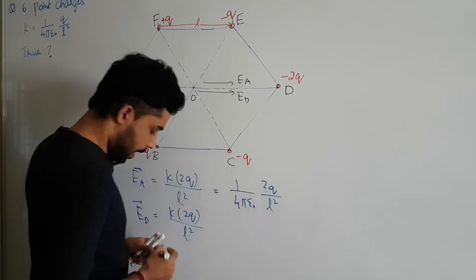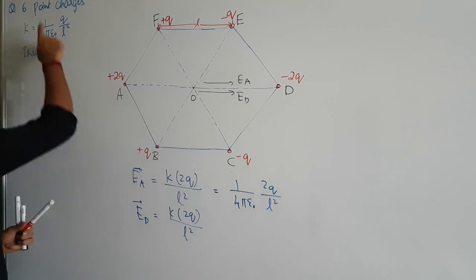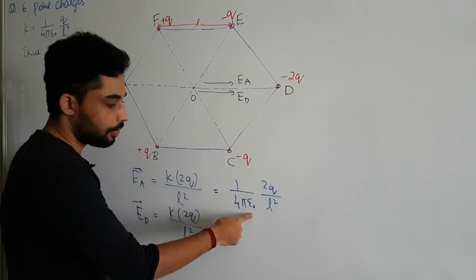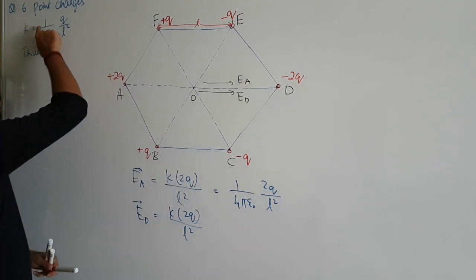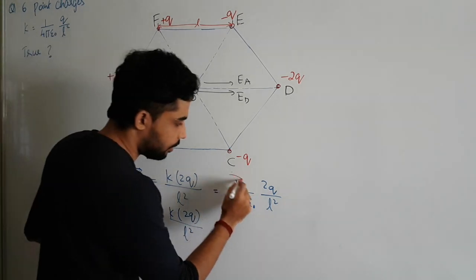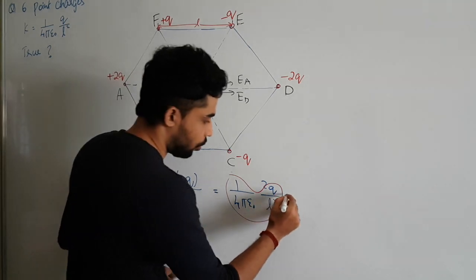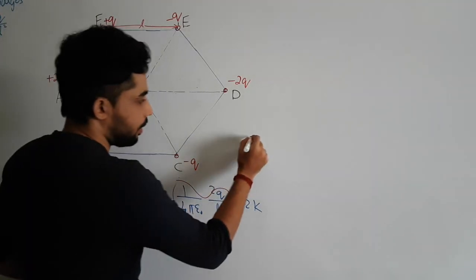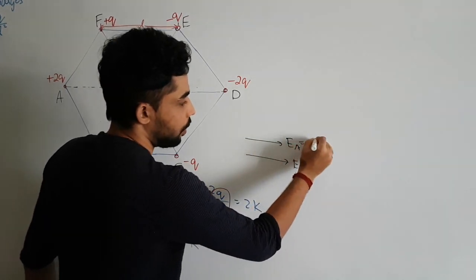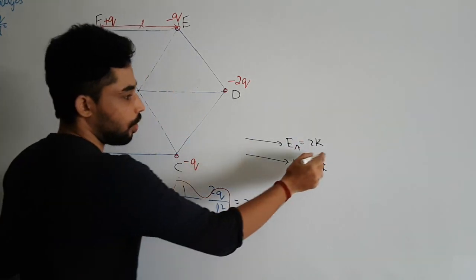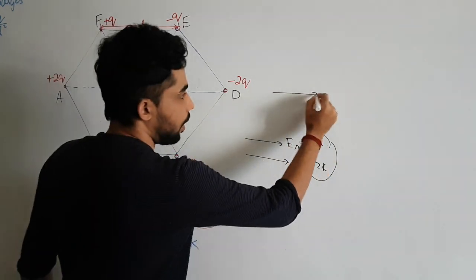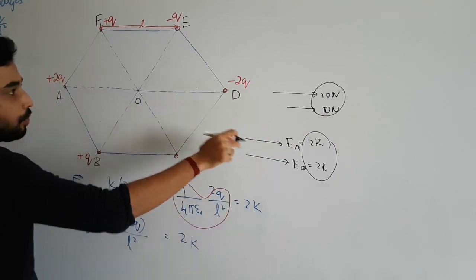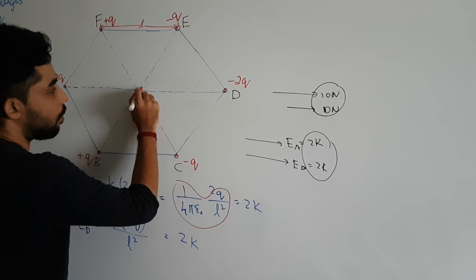Since the question defines k as 1 by 4 pi epsilon naught times q by L squared, we get EA equals 2k and ED equals 2k. Both are in the same direction, so we can simply add them: EA plus ED equals 4k in that direction.